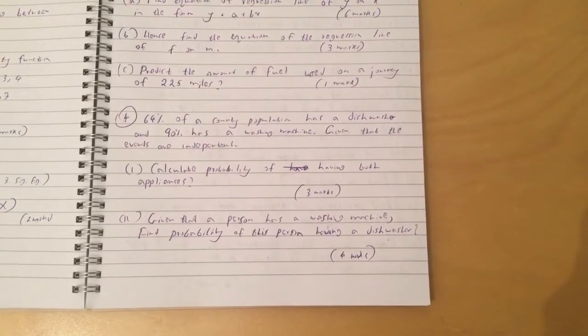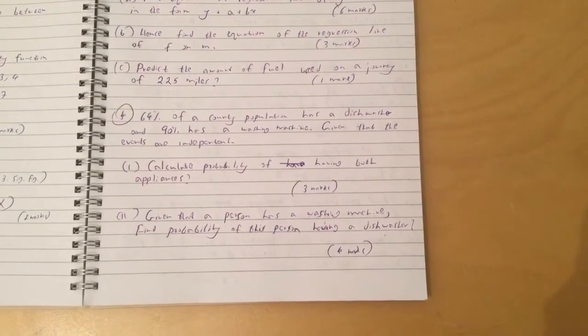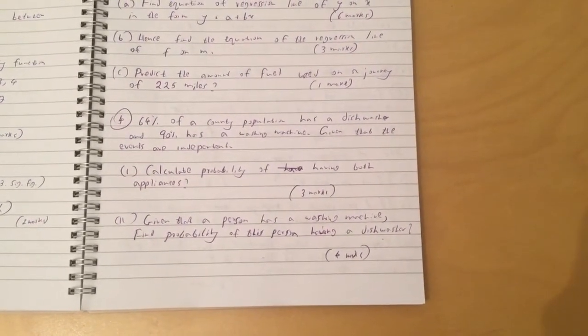Question 2: Given that a person has a washing machine, find the probability of this person having a dishwasher. And question 5.